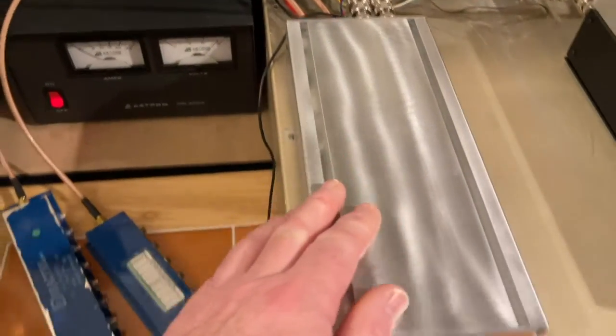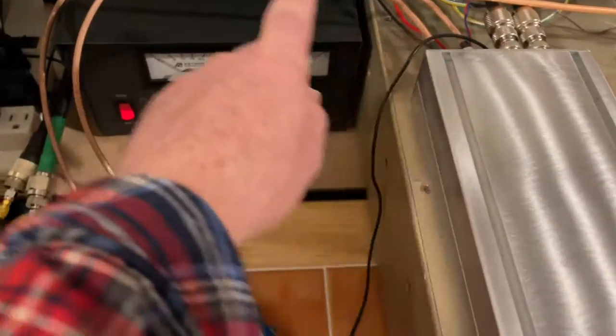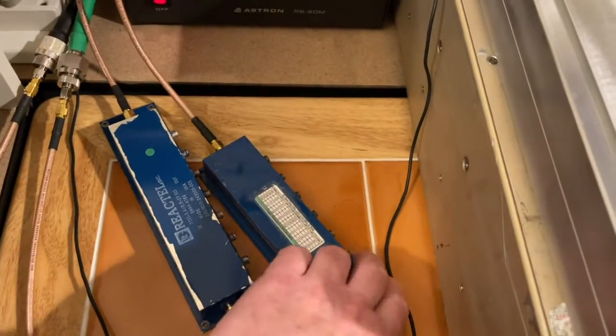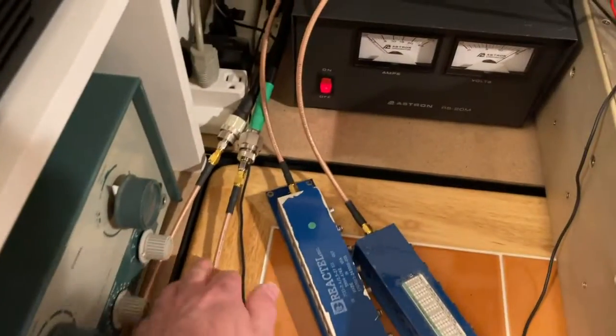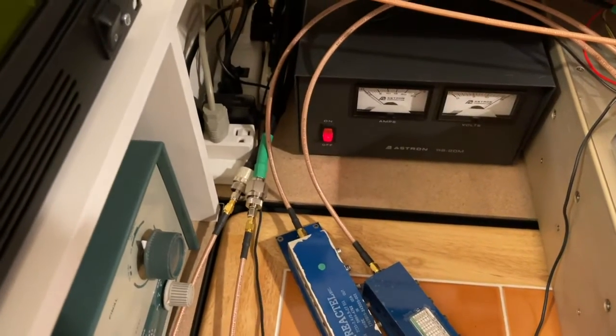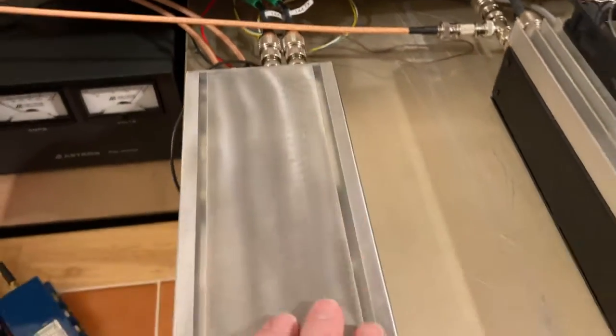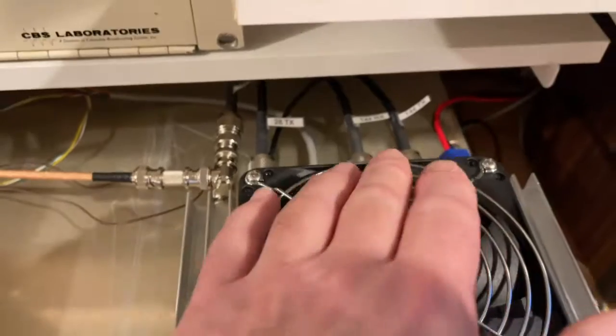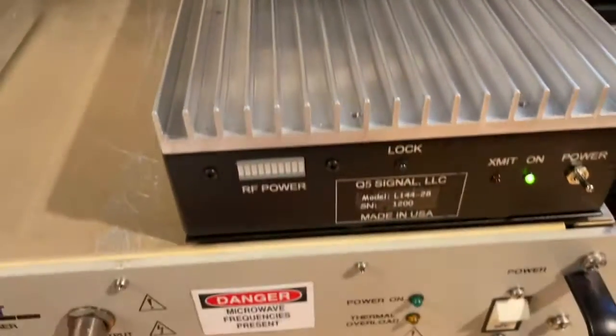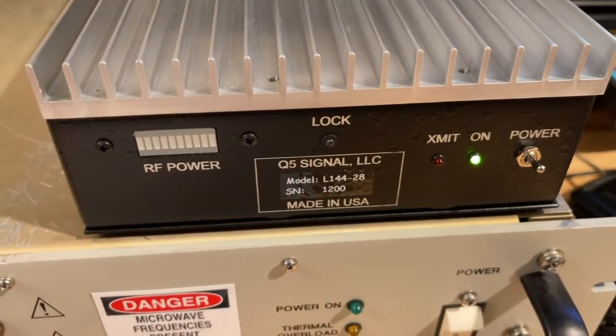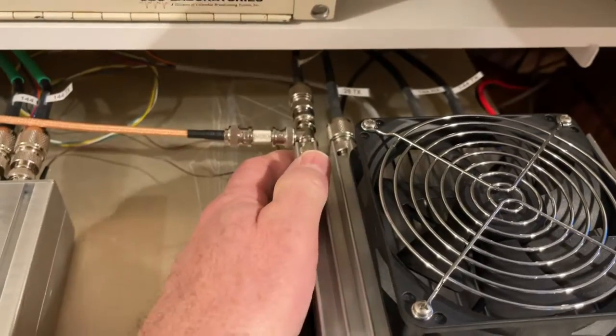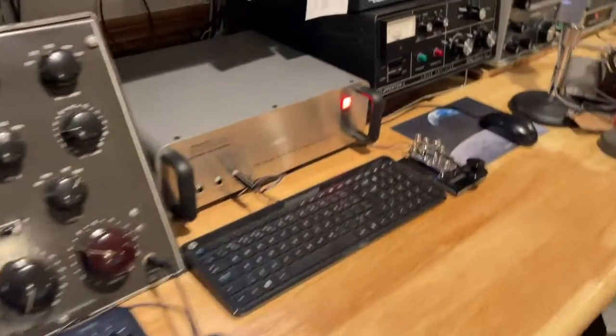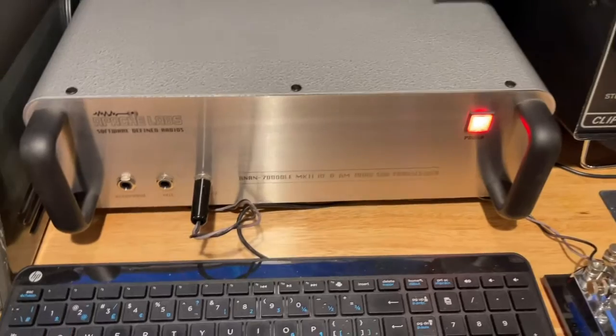The transmitter signal from the Downeast Microwave 2304 transverter goes through another 7-pole filter to remove the LO signal, and then off it goes to the other room to the solid-state power amplifier. And then the IF outputs and inputs on this transverter are connected to the RF inputs and outputs at 144 MHz on the Q5 signal transverter. And then the 28 MHz IFs receive and transmit go into the transverter ports on the ANAN 7000 DLE.